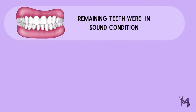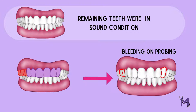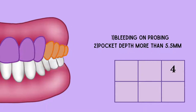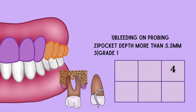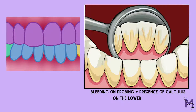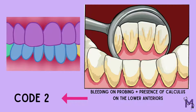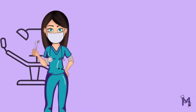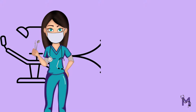The remaining teeth were found to be in sound condition. By applying the scoring criteria discussed earlier, the highest code for the first and second sextants with only bleeding on probing is code 1. The third sextant, along with bleeding on probing, has a pocket on tooth 26 of depth more than 5.5 mm, thus being code 4. Since there is also grade 1 furcation involvement on the same tooth, an asterisk is noted next to the code for this sextant. Lastly, in the fifth sextant, along with bleeding on probing, there is presence of calculus in the lower anteriors, leading to code 2 for this sextant. This data is then entered into the recording format, and the treatment for this patient is done according to the code given for each sextant.